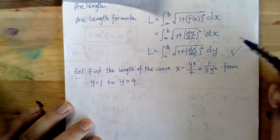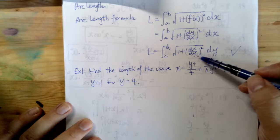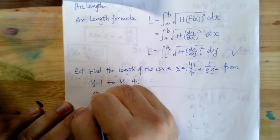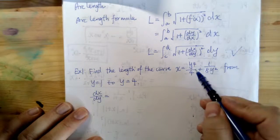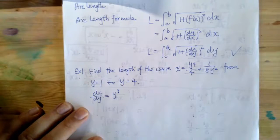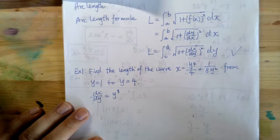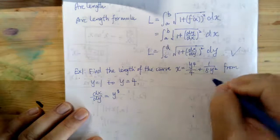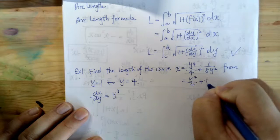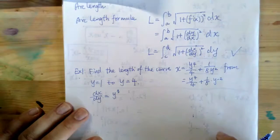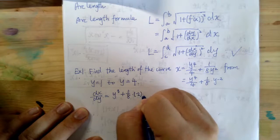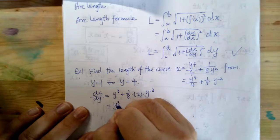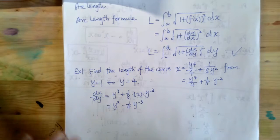To do that, we need to find dx/dy and then square it. Starting with dx/dy: the derivative of y⁴/4 gives y³. For the term 1/(8y²), we rewrite it as (1/8)y⁻², and applying the power rule gives (1/8)(−2)y⁻³. After simplification, dx/dy = y³ − (1/4)y⁻³.